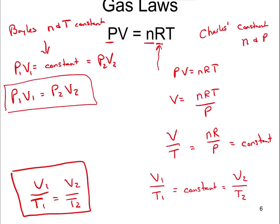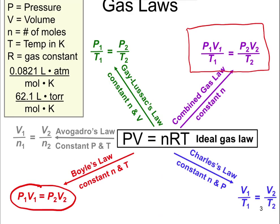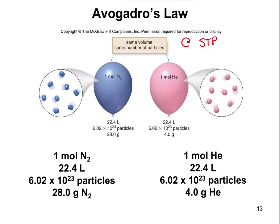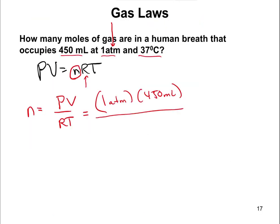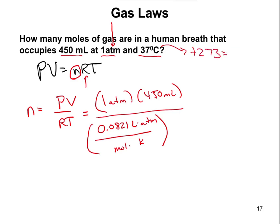The pressure is 1 atmosphere, the volume is 450 milliliters, and the temperature is 37 degrees Celsius. Since gases require Kelvin, 37 plus 273 equals 310 Kelvin. Our R value is 0.0821 liters times atmospheres divided by moles times Kelvin.